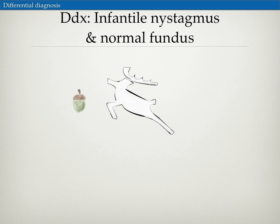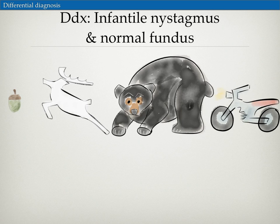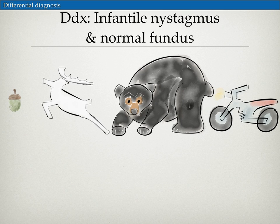But the hungry stag is also being chased by another animal — a bear, or "lay bear" as I like to think of it — as in Leber's congenital amaurosis. But the bear is also being chased by a motorcycle, or a moto in French, and this stands for congenital motor nystagmus.